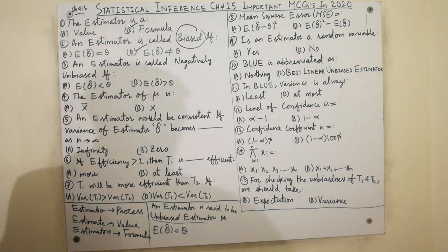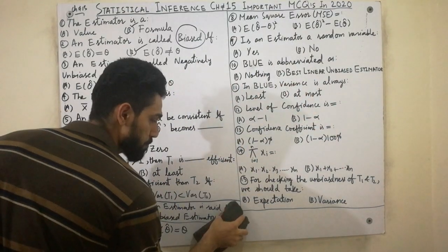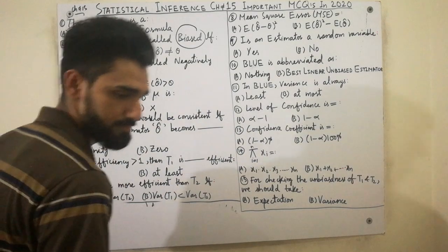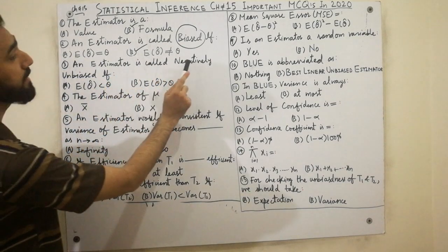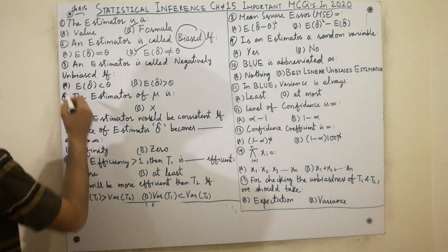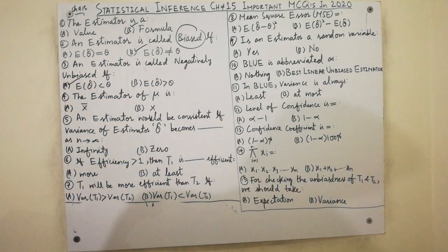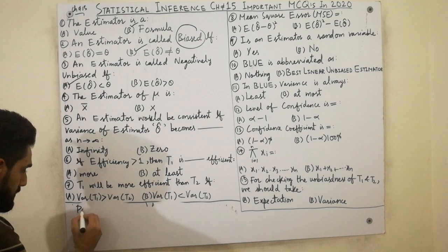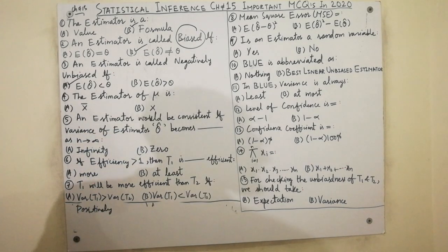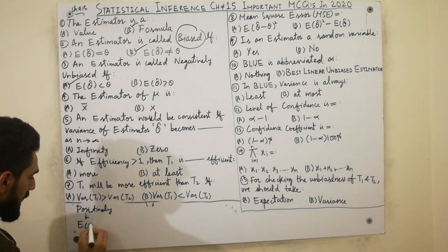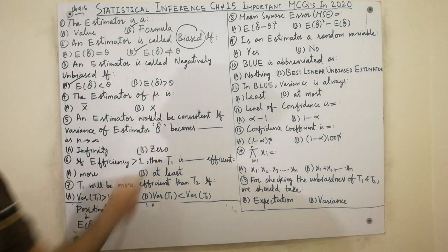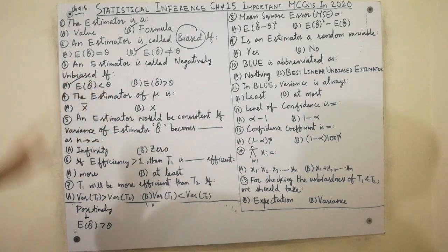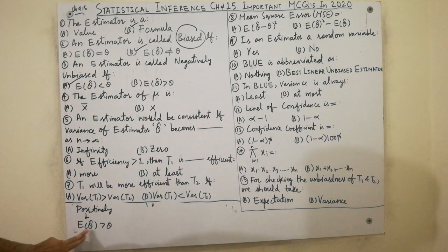An estimator is called negatively unbiased if the expectation of θ̂ is less than θ. But in the positive case, an estimator is positively biased when the expectation of θ̂ is greater than θ. These distinctions are very important for you.